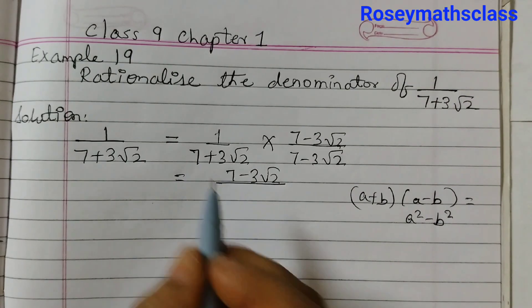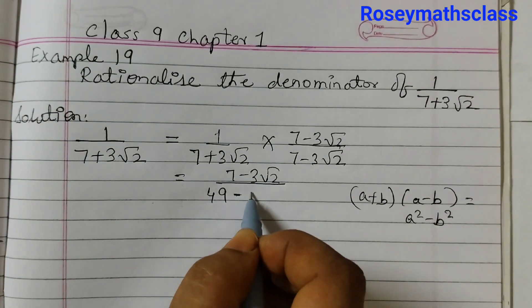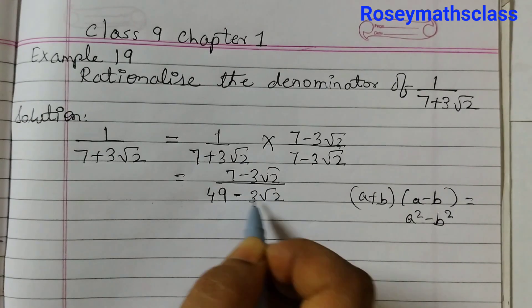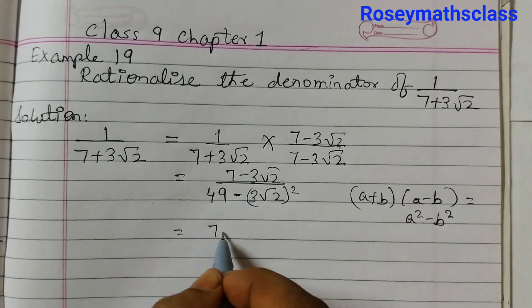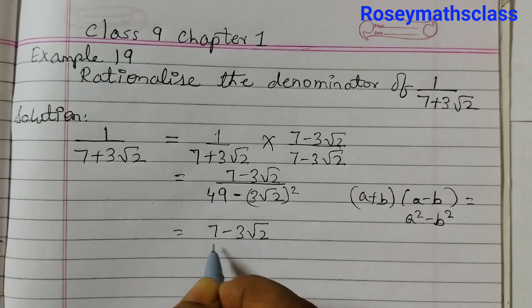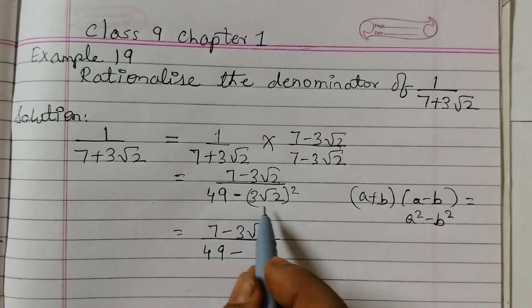So this is A equals 7, so 7 squared is 49 minus 3 root 2 squared. 7 minus 3 root 2 divided by 49 minus 3 root 2.